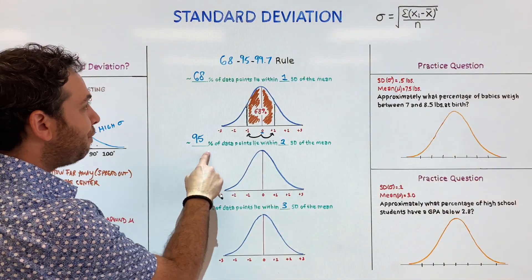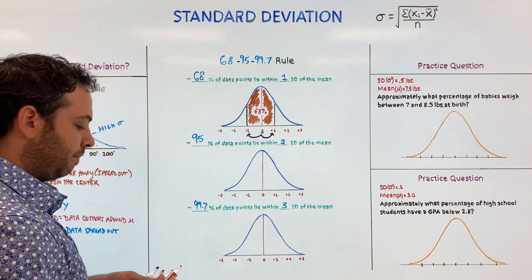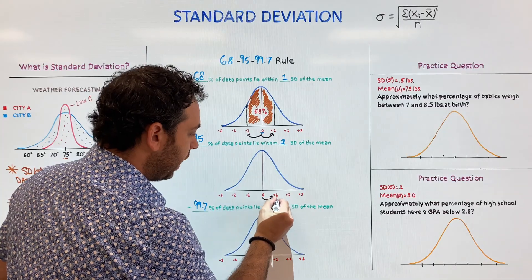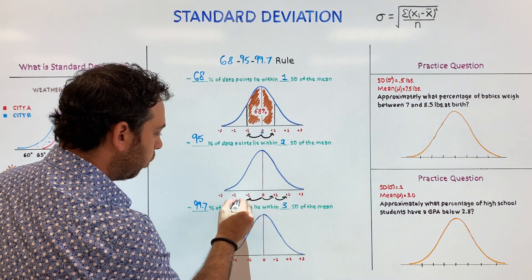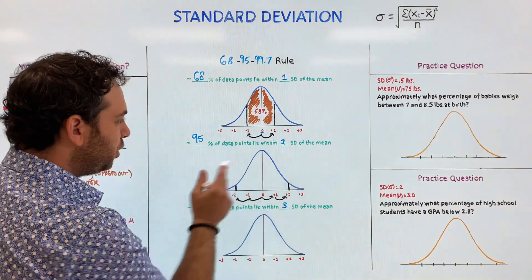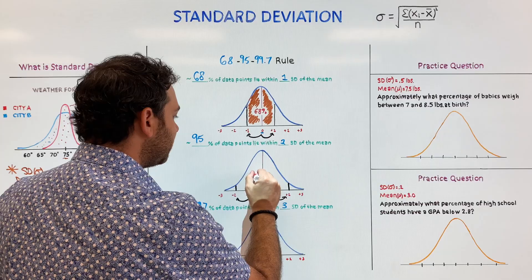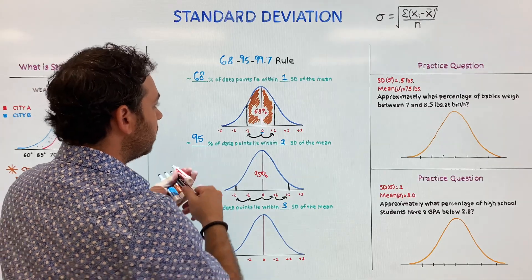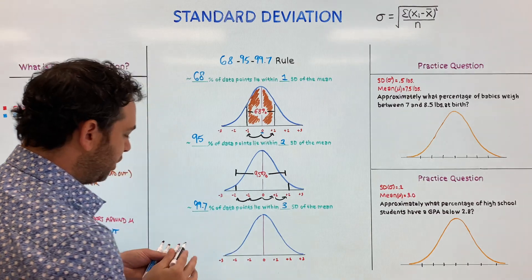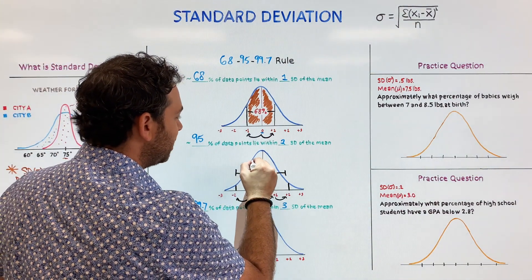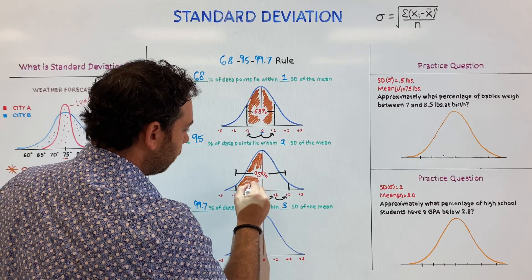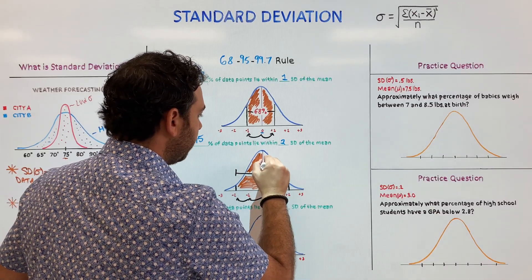95% of the data lies within two standard deviations of the mean. So we have the mean right in the middle, and we go over one and two in this direction, and one and two in the other direction. This tells us that 95% of the data lies within two standard deviations of the mean. Basically, at this point, most of the data falls within two standard deviations of the mean, both above and below.